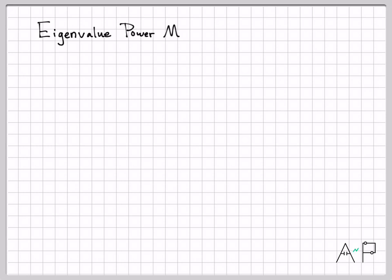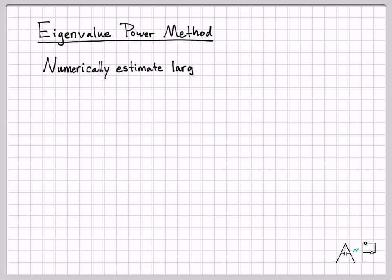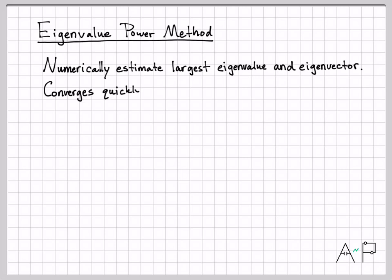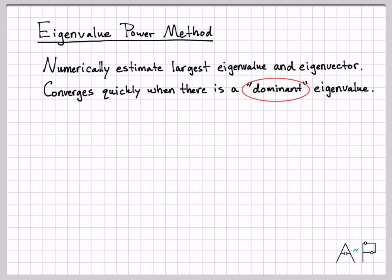Let's take a look at an algorithm for computing the largest eigenvector of a matrix. It's called the eigenvalue power method. This is a numerical approach to numerically estimate the largest eigenvalue and eigenvector of a matrix. It works well when there's a large disparity between the largest eigenvalue and the other eigenvalues — in other words, when there's what we call a dominant eigenvalue.